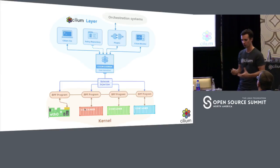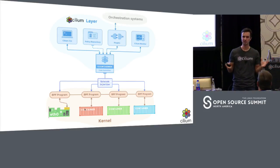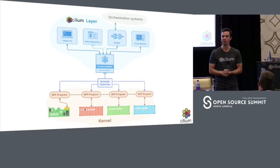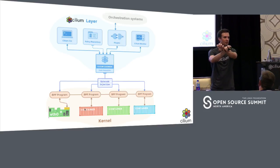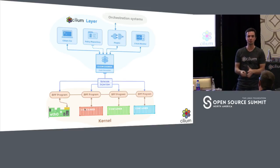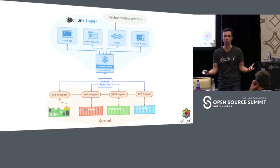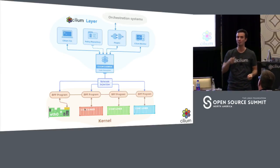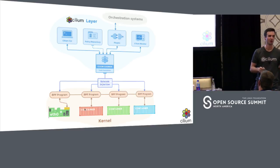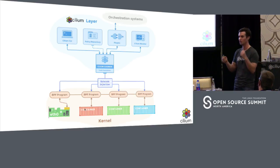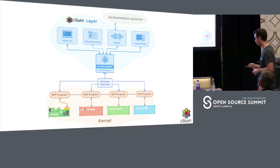A very nice property of BPF code generation is that we can replace these programs at runtime without any disruption. We've done this a couple of times: we find a bug, fix it, and deploy it — not a single connection was lost. We compile a new program, verify it, JIT compile it, and the program gets replaced in an atomic operation. None of the state is lost. This allows hot fixing — if something isn't working, we can compile in debug instructions on the fly without rebooting. As a kernel developer, you normally add printk statements, recompile, reboot. With this, we can debug live and even hot fix live.